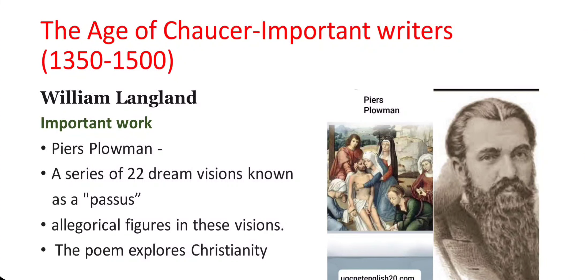Piers Plowman includes a series of 22 dream visions known as Passus, which is Latin for 'Step.' The narrator encounters a number of allegorical figures in these visions. The poem explores Christianity as the narrator looks for guidance on how to lead a godly Christian life.